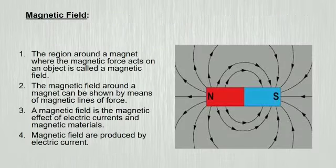Let's know a magnetic field. The region around a magnet where the magnetic force acts on an object is called a magnetic field. For this, let's try this experiment. Take a bar magnet and some pins.